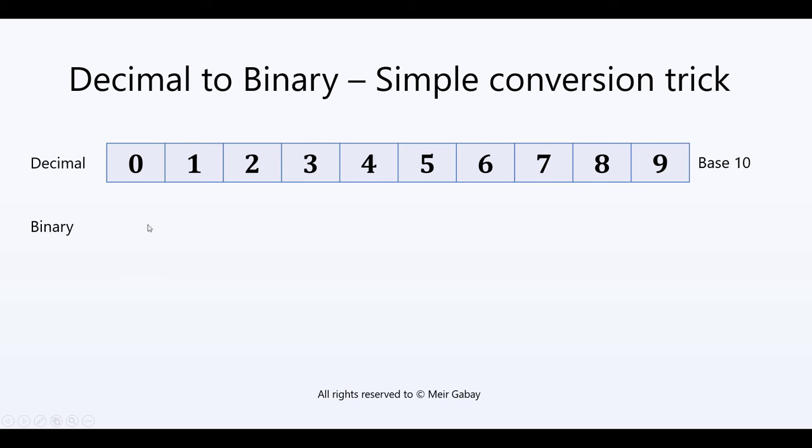Binary numbers are only ones and zeros, so the base of binary is 2 because we only have two options to represent one bit.